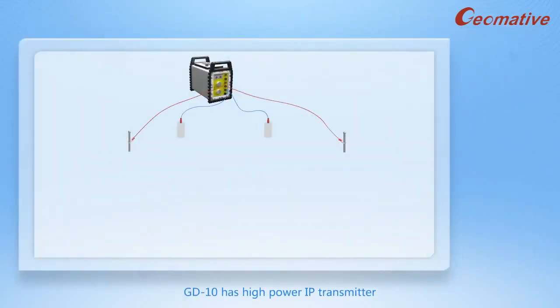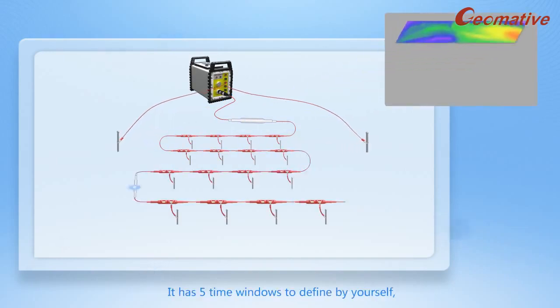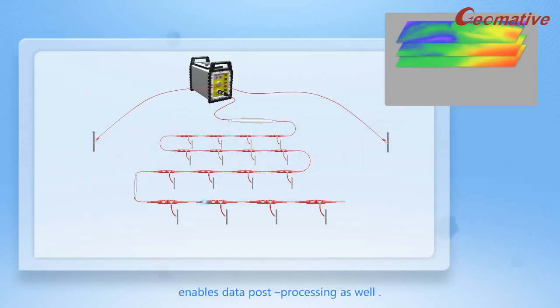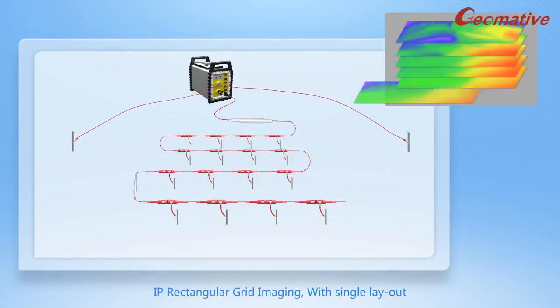GD-10 has high-power IP transmitter and receiver with variety of transmitting waveforms and cycles. It has five time windows to define by yourself and enables data post-processing as well.